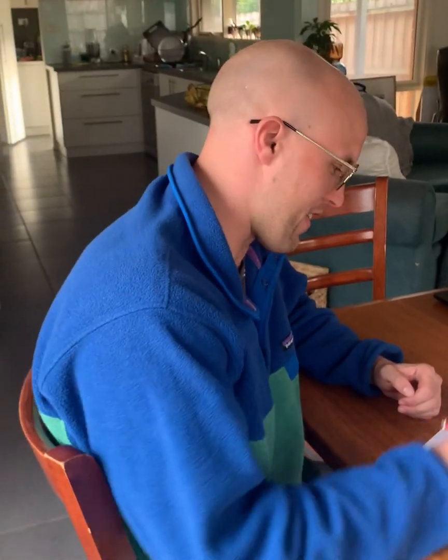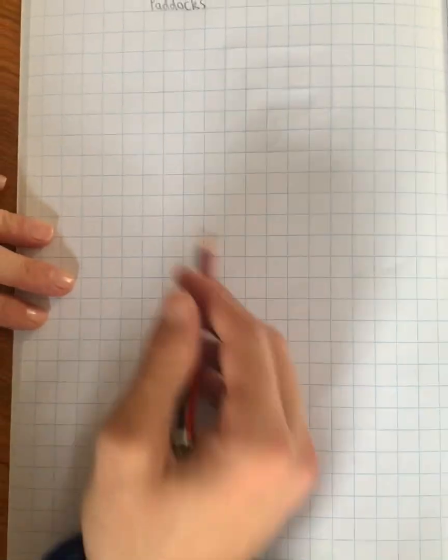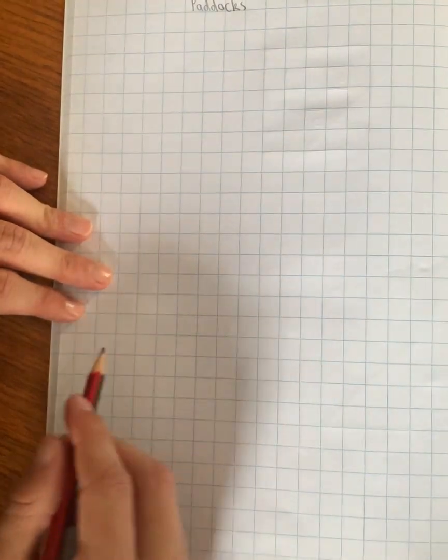So the first thing that we have to do is set up the board. So I'll get Ebony to just go over here for a minute. The way we set up the board is we want a 5 by 5 grid.